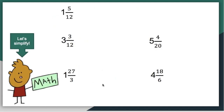Let's examine these mixed numbers and see if they need to be simplified. Let's take a look at the first example: one and five twelfths. Five and twelve don't have a common factor except one, which means that this mixed number is already in its simplest form since the numerator and the denominator cannot be broken down any more into smaller parts.